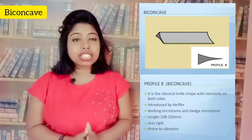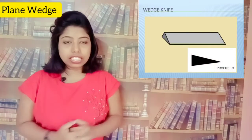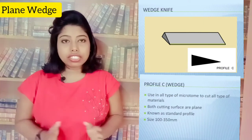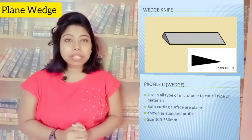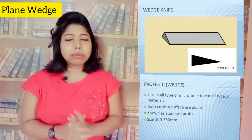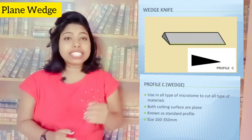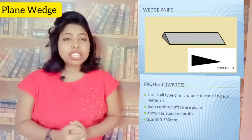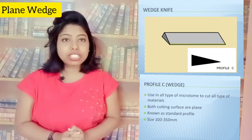The next knife is the plane wedge — spelled W-E-D-G-E. Both sides of this knife are plain. It is used in all types of microtomes to cut all types of materials, whether hard or soft. This is called the standard knife — the plane wedge.